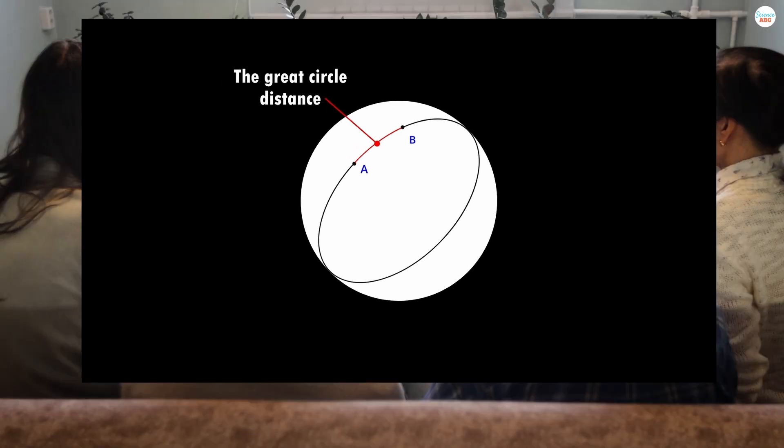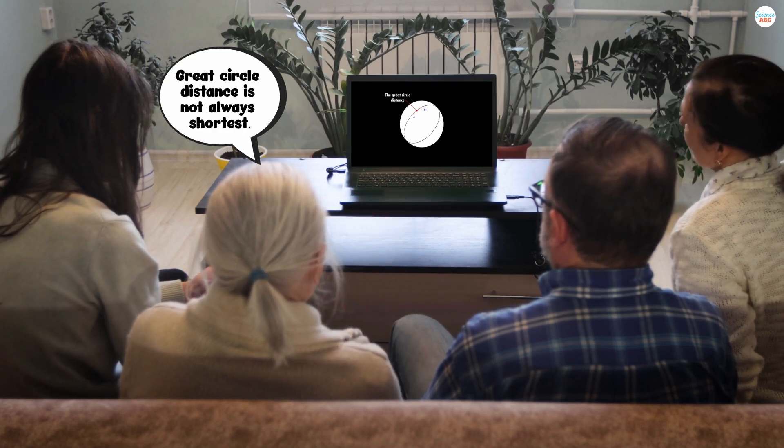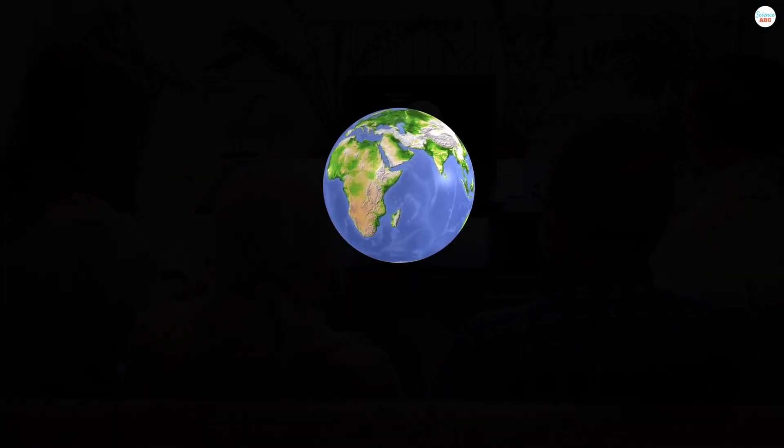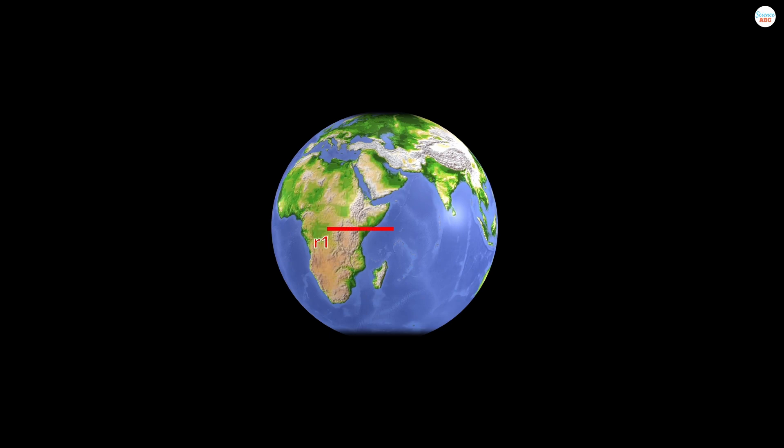However, even great circle distances do not represent the true shortest distance between two given locations. The great circle distances are calculated assuming Earth to be a perfect sphere, but the planet is more of a flattened sphere, with different radius values towards the equator and the poles. The great circle values therefore have a tolerance of about plus or minus 5%.